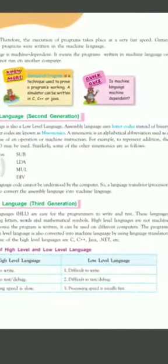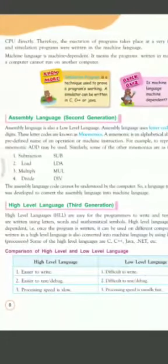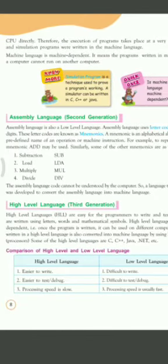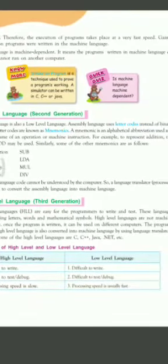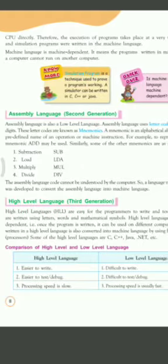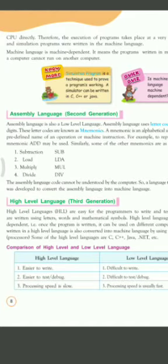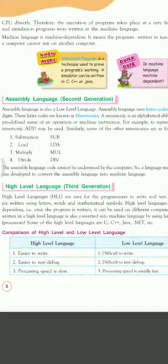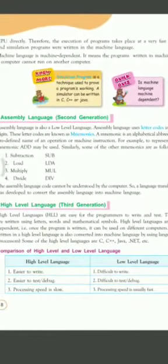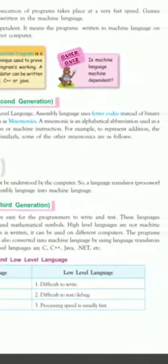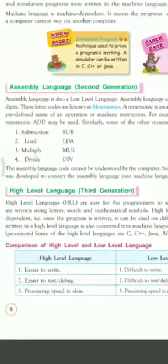For example, to represent addition, the mnemonic is ADD. Similarly, the subtraction code is SUB, the load code is LDA, the multiply code is MUL, and the divide code is DIV. Assembly language code cannot be understood by the computer directly, so a language translator was developed to convert assembly language into machine language.